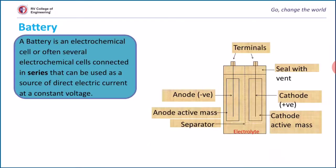Now we will discuss what is a battery. Battery is a device which converts chemical energy to electrical energy. A cell designates a single unit. A battery is an arrangement of two or more cells usually connected in series or parallel or both. Battery consists of three major components: anode, cathode, and electrolyte.